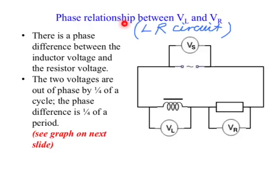Phase relationship between inductor voltage and resistive voltage in an LR circuit. There is a phase difference between the inductor voltage and the resistor voltage. The two voltages are out of phase by a quarter of a cycle. In other words, the phase difference between them is a quarter of a period. You can see the graph on the next slide.